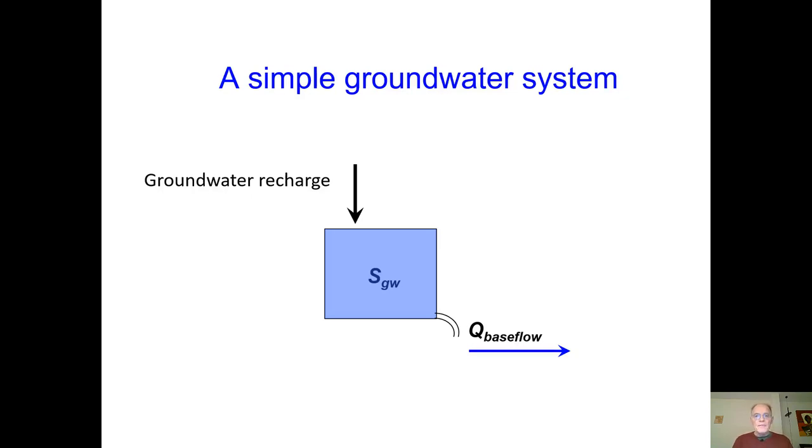And the aquifer has, as it were, a little hole from which the baseflow is constantly released. The groundwater is connected to the surface water through the baseflow somewhere downstream.